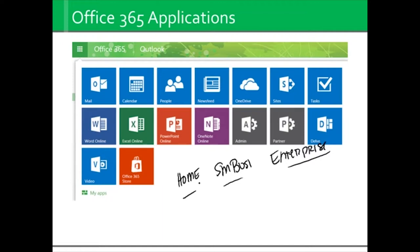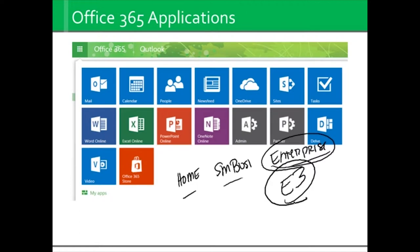What you do have to understand is the basis of this course is based off the enterprise version and it is based on the E3 subscription. The E3 subscription is the Cadillac of Office 365 — it has everything. But there are versions that only have the software but no email, and also packages that have email and no additional software. So you really want to make sure you go up to the site and find the link for compare all plans so that you know you're going to get what you need.